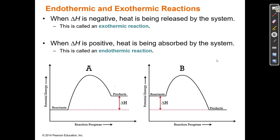Delta H, enthalpy, equals heat at constant pressure. So delta H equals Q, where Q is heat. Heat is when thermal energy is transferred during a reaction. It can either be released—when thermal energy is released, the reaction heats up and particles start moving faster—or thermal energy can be absorbed, in which case the particles in the surroundings cool down and start to move slower.